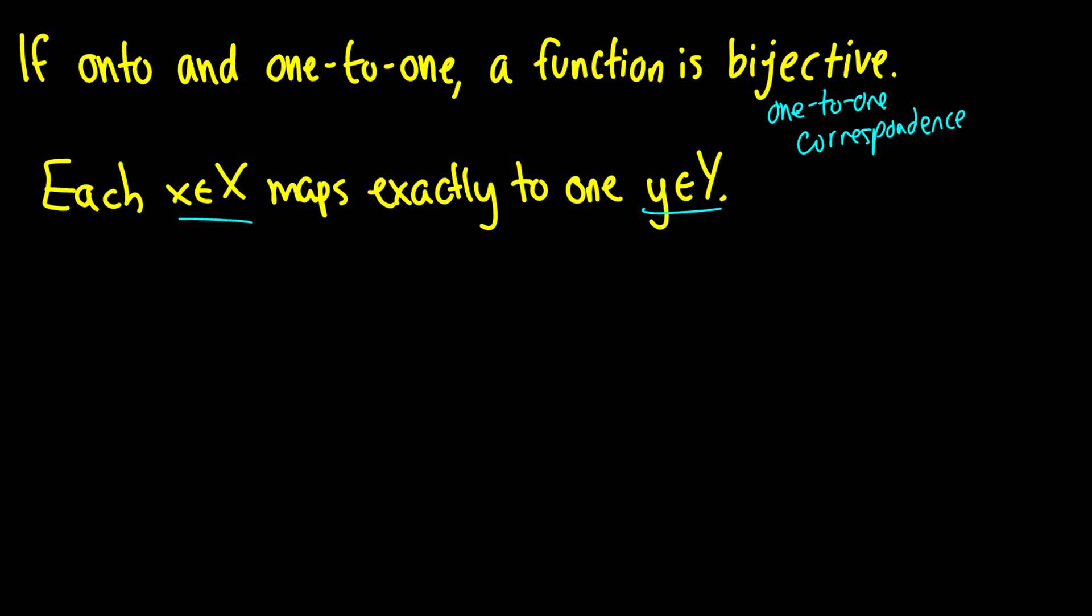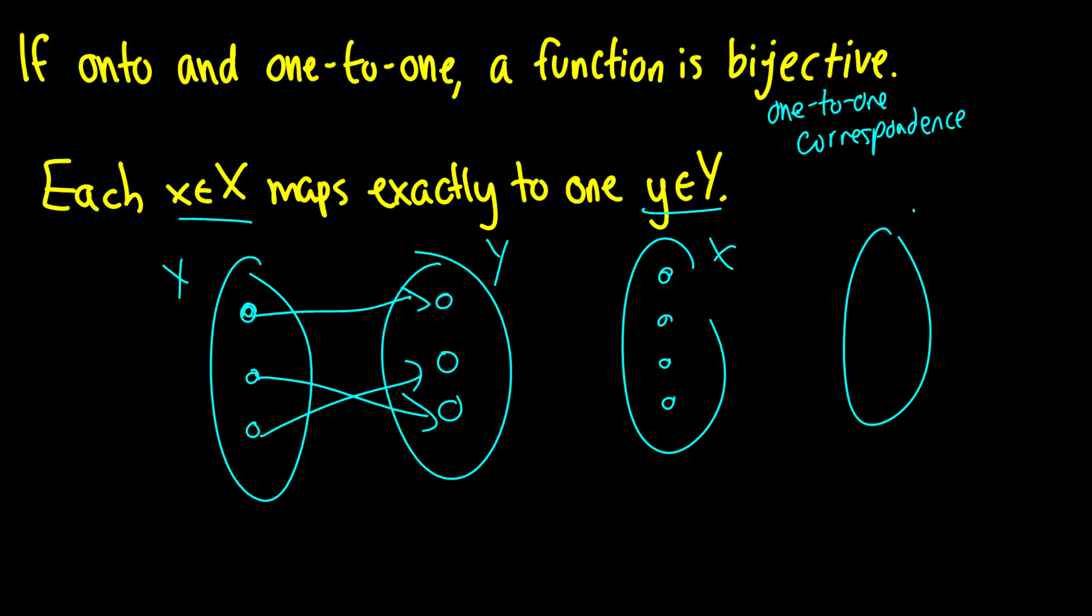Basically, what that says is that each x in our domain maps exactly to one y in the codomain, and it hits every single y value. So if we have three elements in the domain, we have three elements in the codomain, and each of these will map exactly to one in the other.